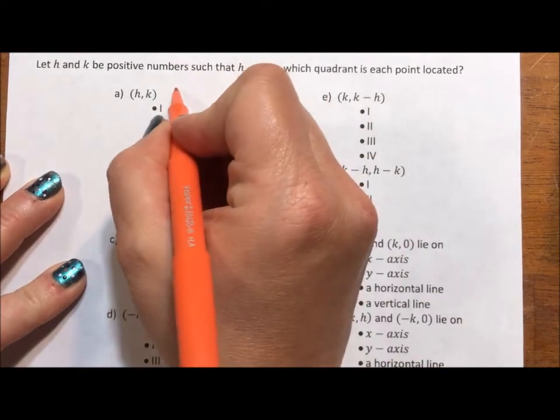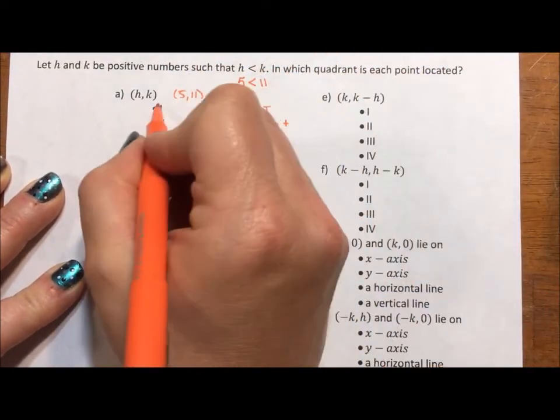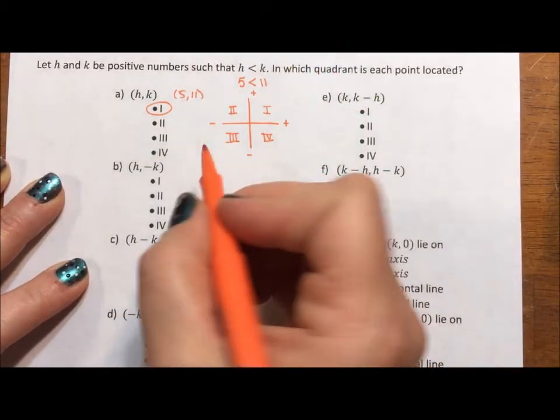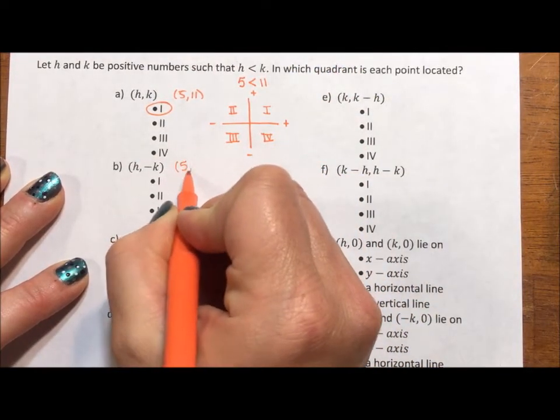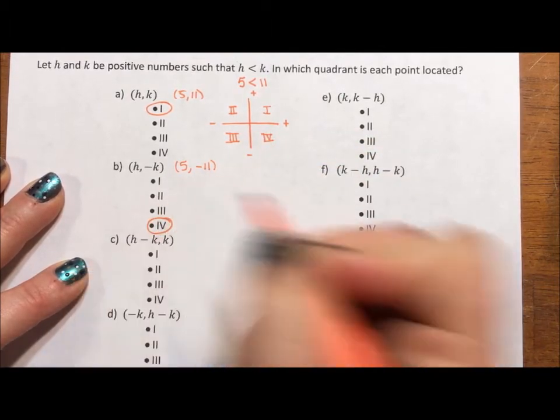So h, k would be 5, 11, using our example, which is positive, positive. That's the first quadrant. h, negative k would be 5, negative 11. So positive x, negative y, that's going to be the fourth quadrant.